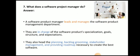What does a software project manager do? A software product manager leads and manages the software product management department. They are in charge of software product specialization, goals, structure, and expectations. They also head the planning, backlog grooming, stakeholder management, and providing the roadmap necessary to create the best software.